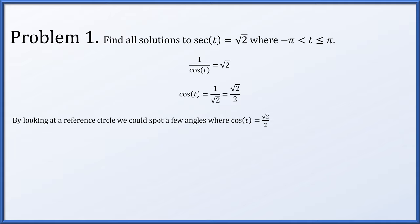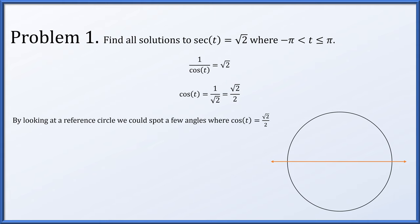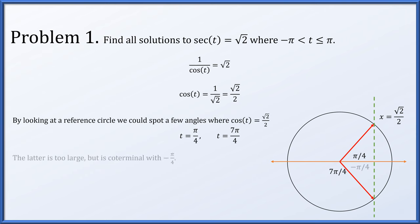Looking at a reference circle, we spot angles where cosine of t equals root 2 over 2. Because we want the x-coordinate to equal root 2 over 2, we draw the vertical line x equals root 2 over 2. This intersects the unit circle at two standard reference angles: pi over 4 and 7 pi over 4. However, 7 pi over 4 is larger than pi, so it falls outside the restricted range. Since 7 pi over 4 is coterminal with minus pi over 4, we use that instead. Our two solutions are plus or minus pi over 4.